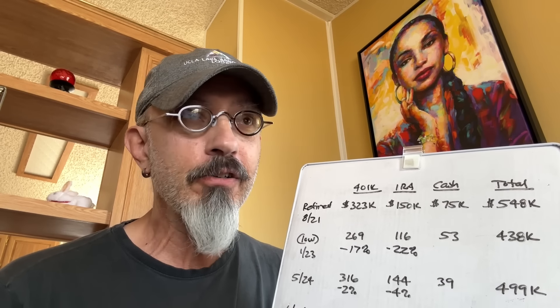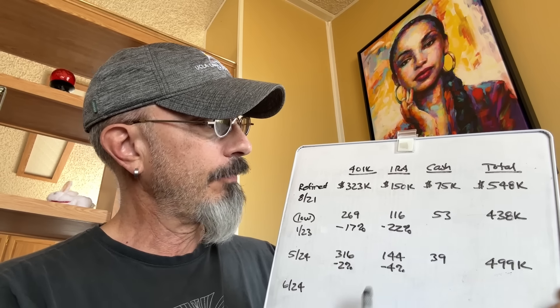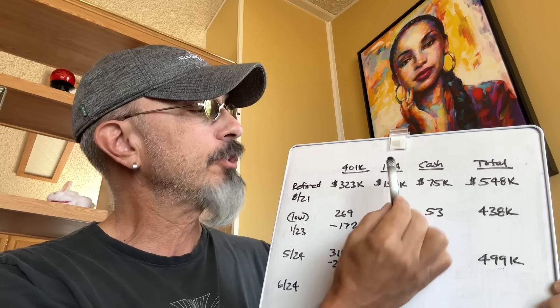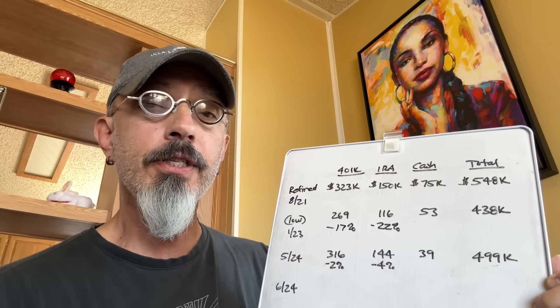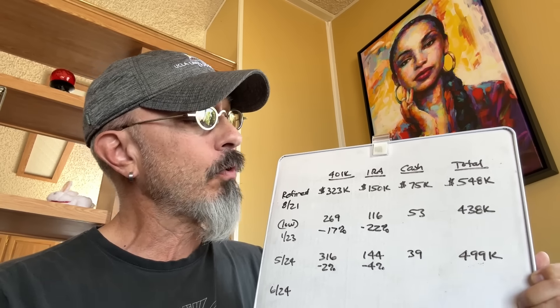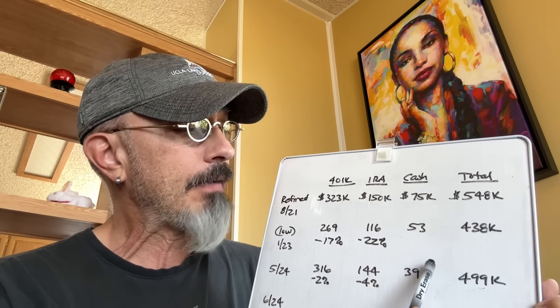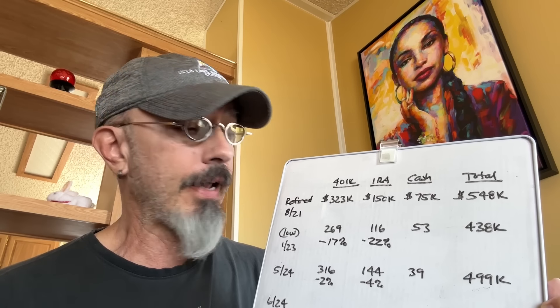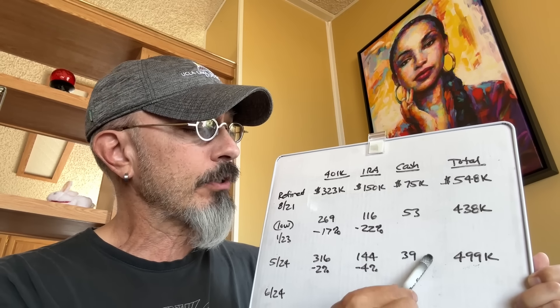So, where was I last month? May, $316,000 in this 401k. Only 2% down from when I retired. $144,000 in that IRA, which used to be, when I retired, a 401k. Only 4% down. Not bad. Cash, $39,000 for a total of $499,000. Not too bad, right? From when I retired, I'd made up a lot of ground. A lot of ground.